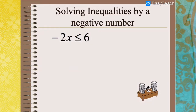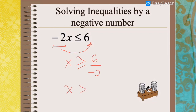Another example: negative 2 is being multiplied to x, so when we transfer it to the other side of the inequality it will be divided. Do not forget to reverse the symbol of the inequality. Therefore x is greater than or equal to 6 divided by negative 2, which gives x greater than or equal to negative 3.